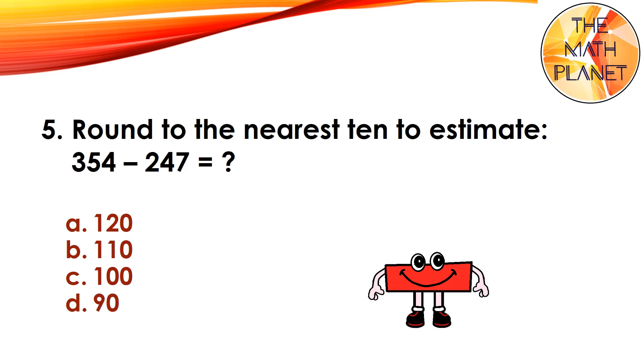Question 5. Round to the nearest ten to estimate 354 minus 247. The correct answer is C because 350 minus 250 equals 100.